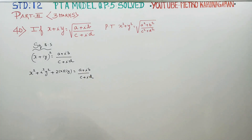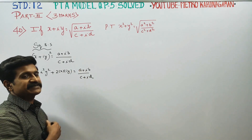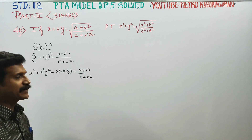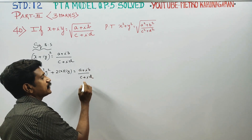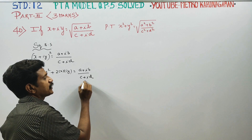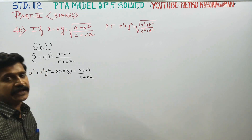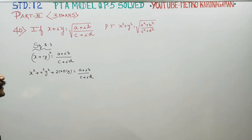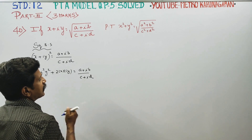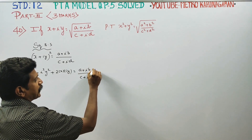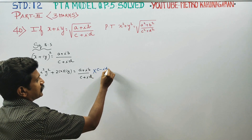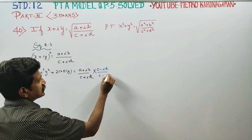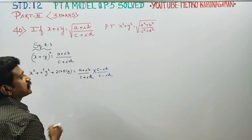This is a complex number in standard format — a rectangular form. To simplify, we need to rationalize the denominator. I am going to multiply by its conjugate (c minus id) by (c minus id).